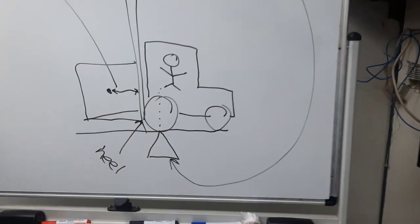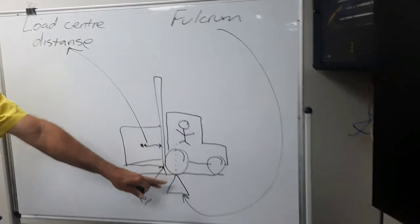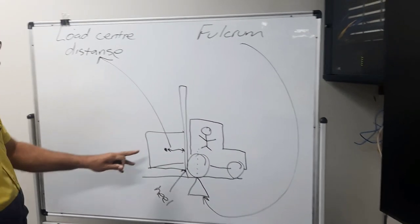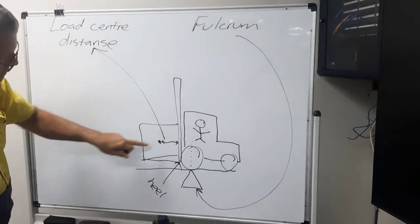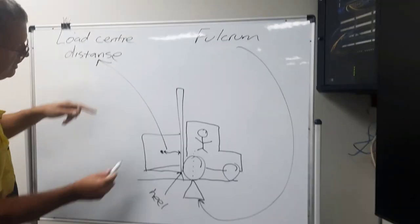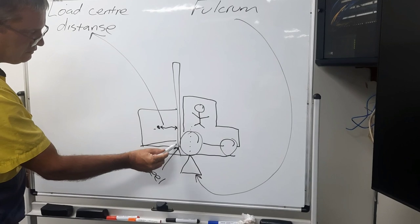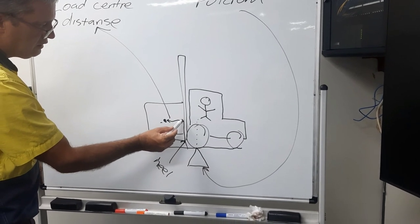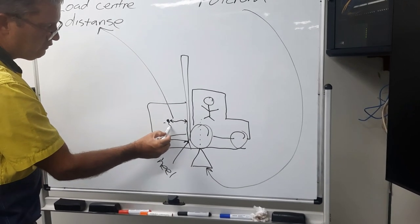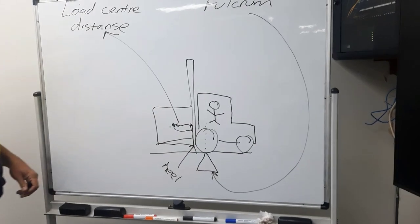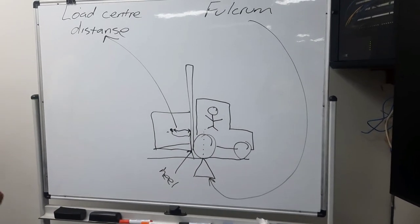Like that. So you've got fulcrum, touches the bottom of the front wheel. And load center distance. Load, which is there. Center, which is there. And distance is from the heel. The heel going up there. Across there. So that's your load, center, distance.